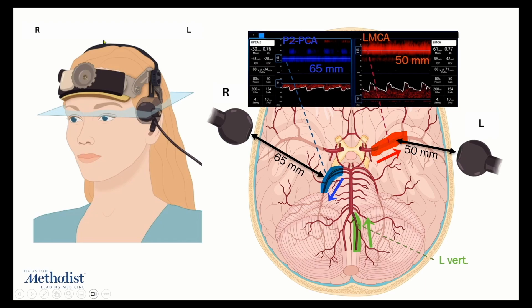For intraoperative TCD monitoring, we use a head frame to hold the TCD probes in a steady position. Through the left temporal bone window, we insonate the left middle cerebral artery, or MCA, to detect emboli flowing through the left common and internal carotid arteries. Furthermore, a drop in the left MCA blood flow after deploying the proximal aortic extension cuff could indicate unintentional coverage of the left common carotid artery orifice.